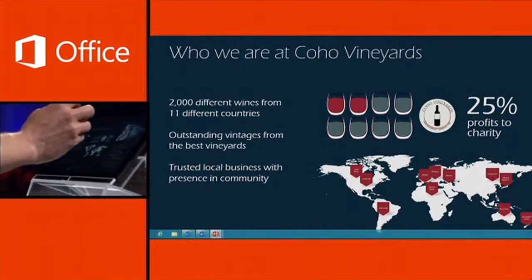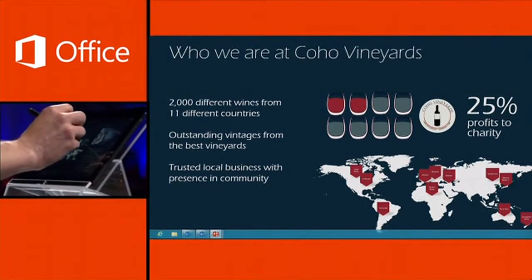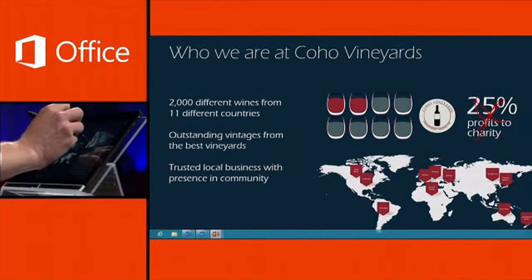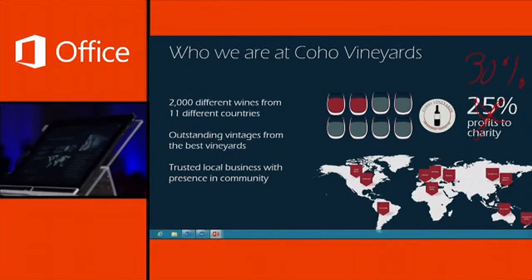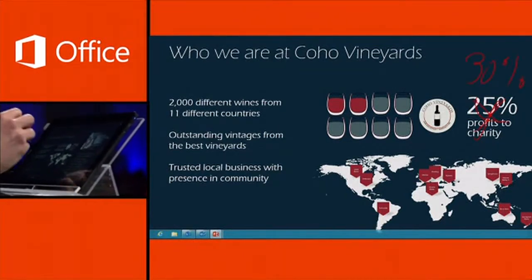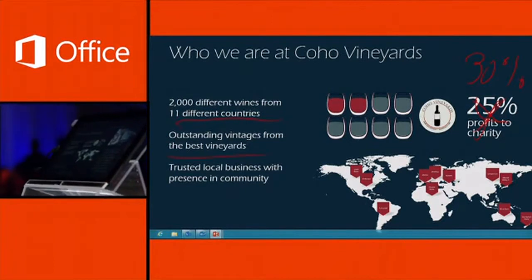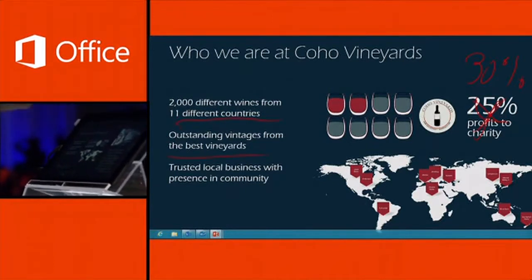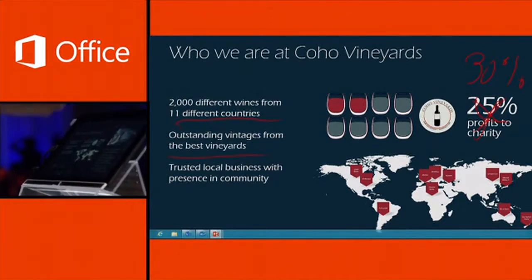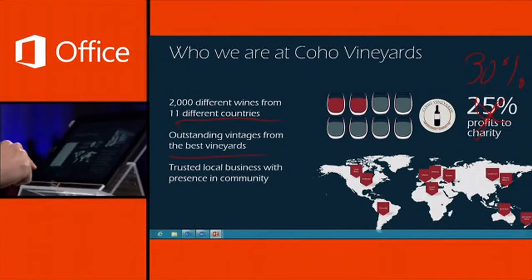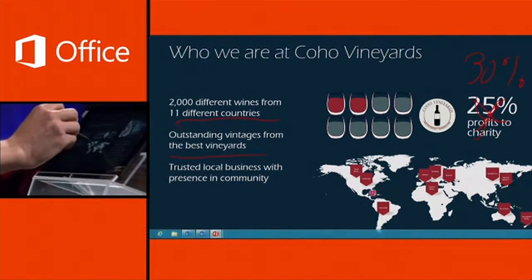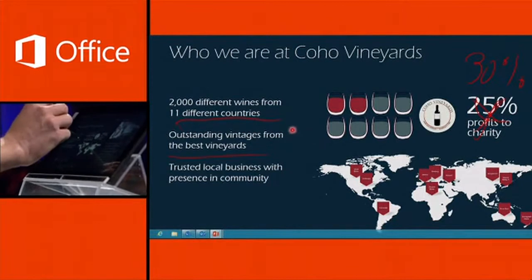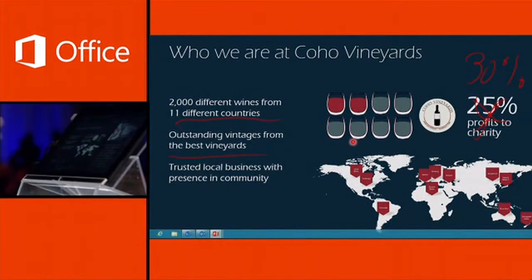Let's say instead of 25% profits going to charity, I want to cross that out and change it to 30% going to charity. I can underline and highlight as well. Some people like to use a pen as a laser pointer when giving presentations, so we have a laser pointer option too. You can see the laser pointer appear on the slide as I hover over it, so I can highlight things during my presentation.